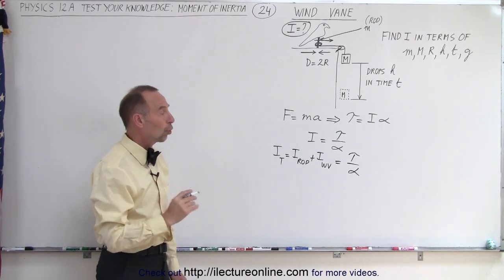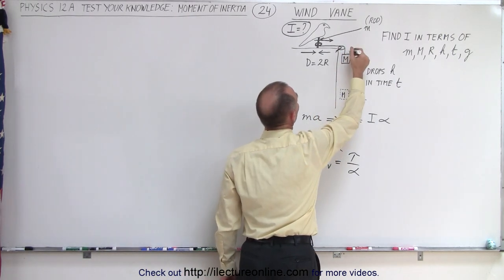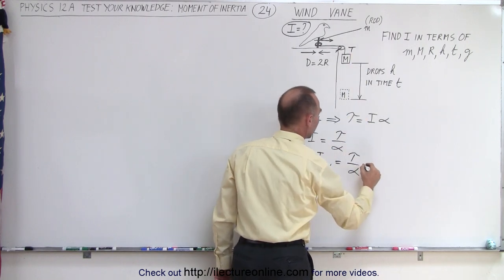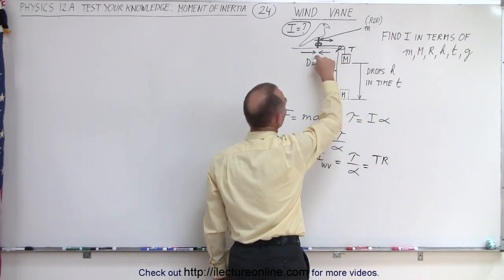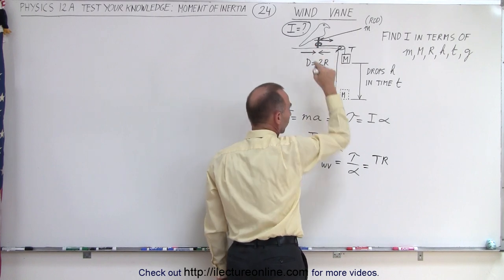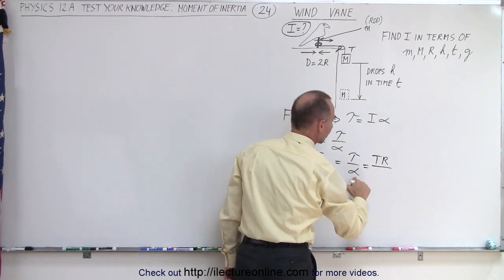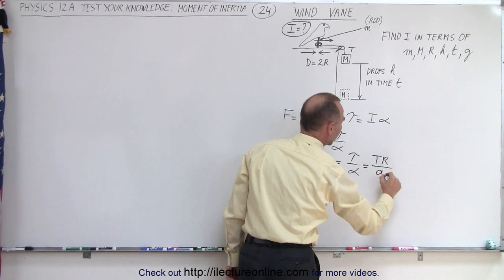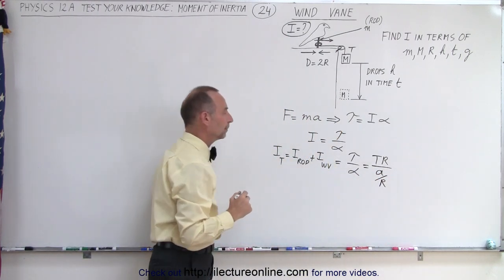The torque is going to be caused by the tension in the rope. So that will equal the tension times the radius over which it acts — the radius of the rod — divided by the angular acceleration. The angular acceleration is going to be the linear acceleration divided by radius R.